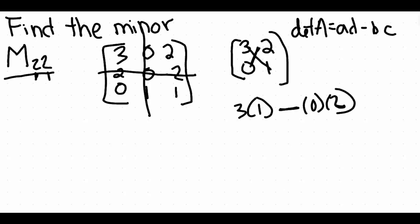When we actually simplify this together, do keep in mind your order of operations here. So three times one is just a three, minus zero times two is just a zero, and three minus zero is just a three. So three is actually the minor of this particular matrix here.